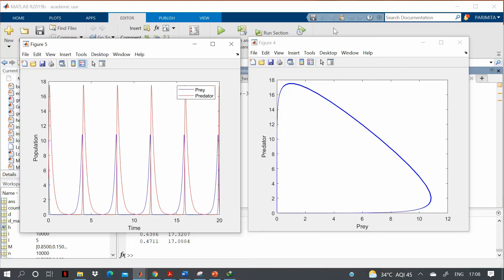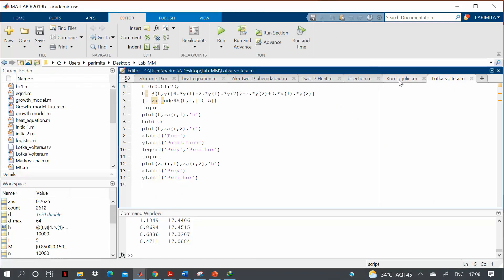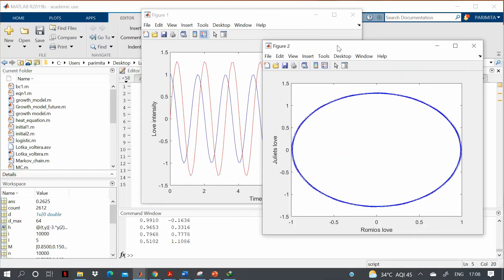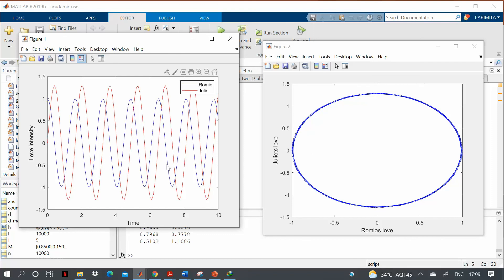Now let us run another program that was for Romeo Juliet model. So I will just press run button and then you will see that I am getting this figure which I have already shown.